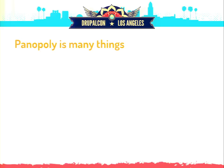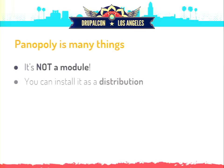Panoply is many things, but one thing it absolutely is not is a module. It's not something that you put in your site's modules folder and enable. But what you can do is install it as a distribution. A Drupal distribution is Drupal core plus some contrib modules, themes, and some default configuration that you install just like Drupal core, but out of the box it has some additional functionality. For example, there's the restaurant distribution for creating restaurant websites — install it and out of the box it has an online menu, reservation system, a map, all the stuff you'd expect.